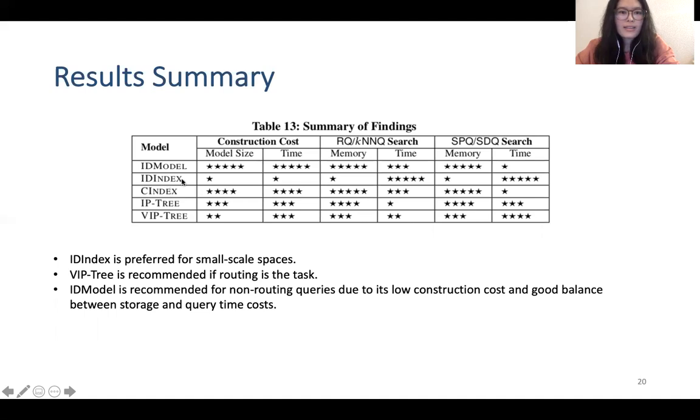Then ID index. It runs fastest for all queries. But it needs a large time to construct offline. C index is similar with ID model when doing search. Then IP tree and VIP tree. They perform well for SPQ and SDQ.